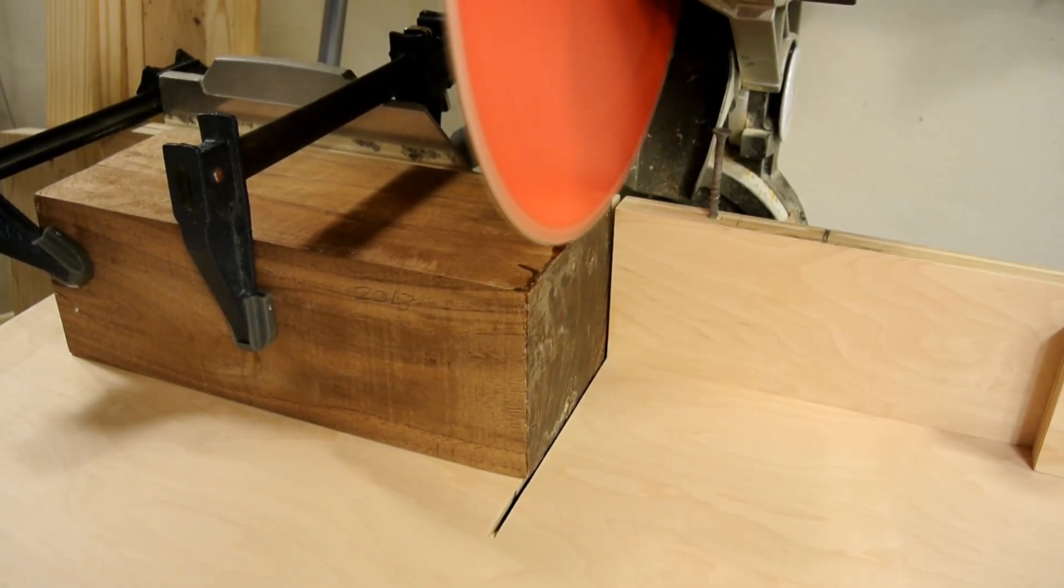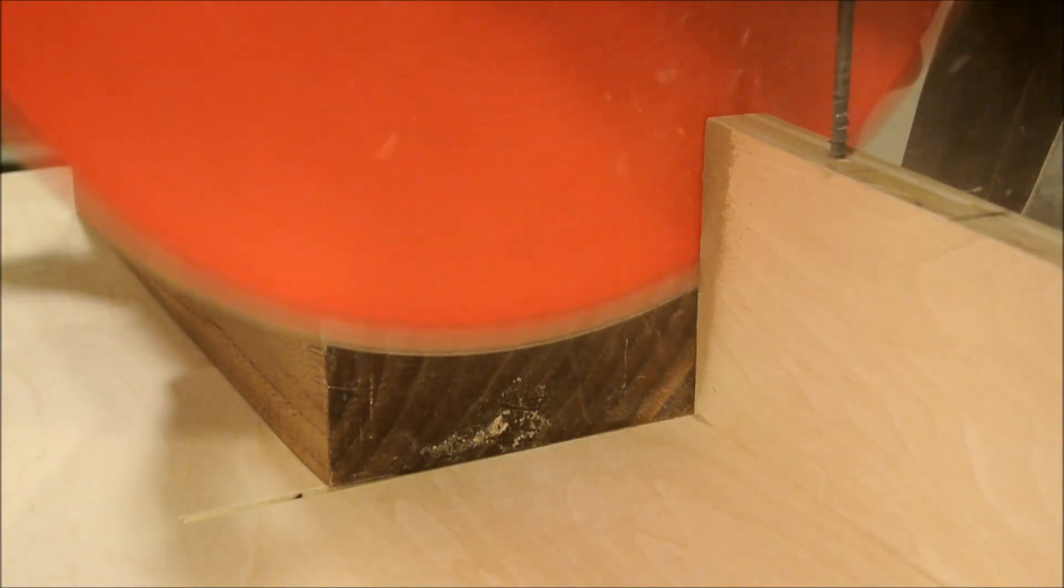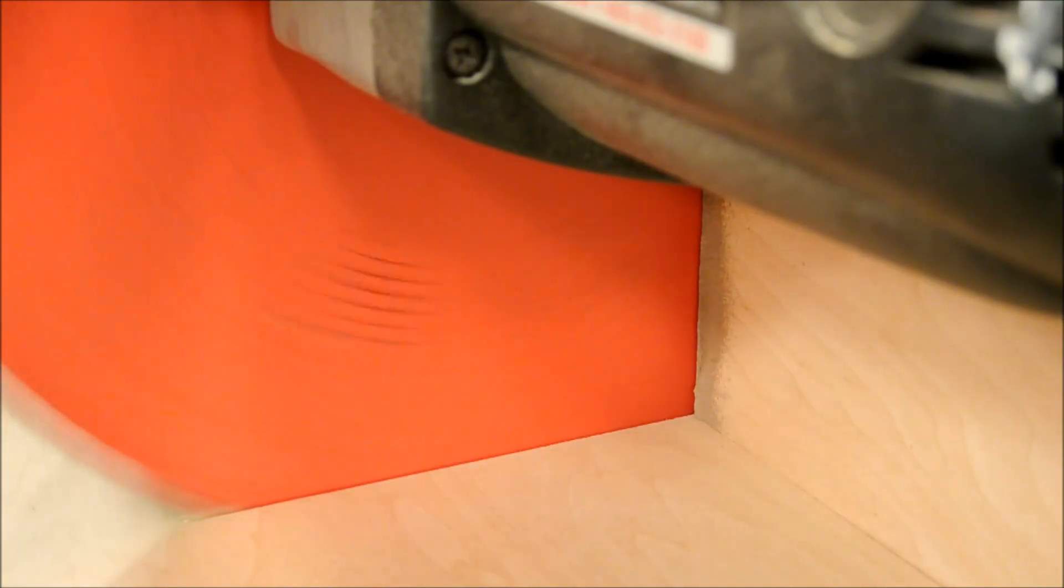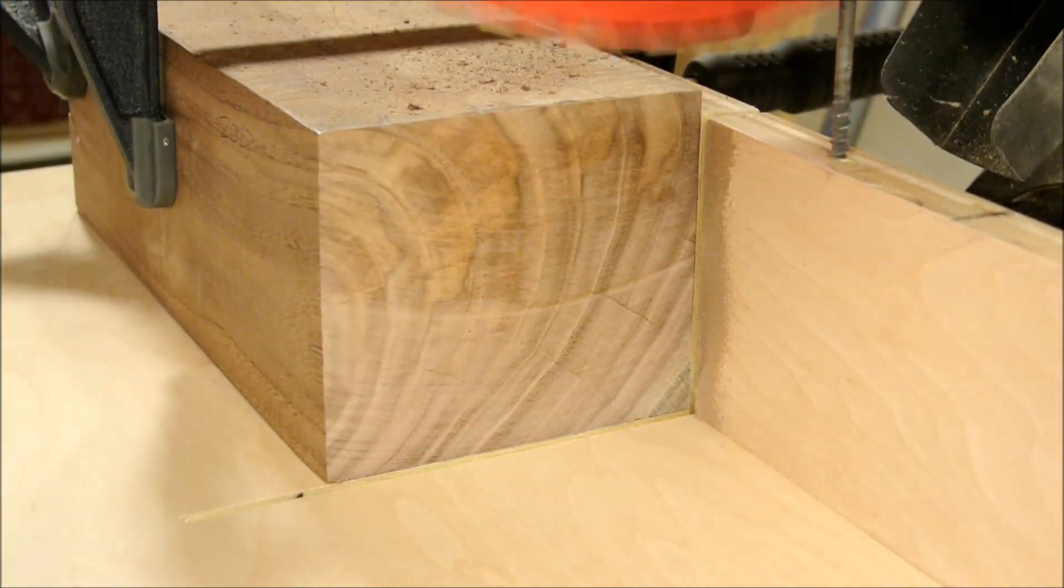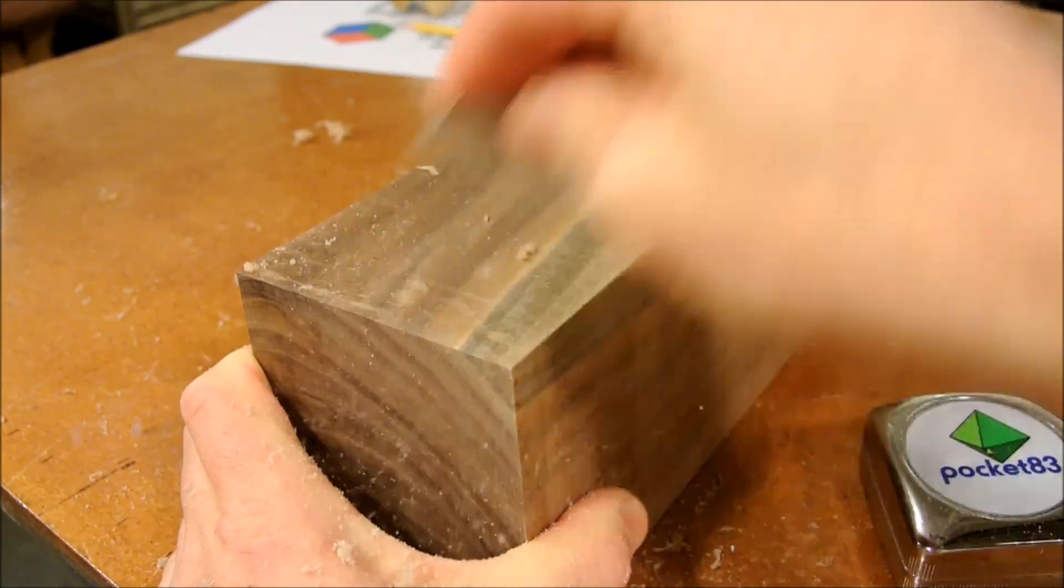It looks like the end grain is wet here, but that's actually paraffin wax. The wax keeps moisture from exiting the wood too quickly during the drying process. Because it takes a few years to dry a chunk that's this thick, drying it out slowly helps to minimize those little cracks.